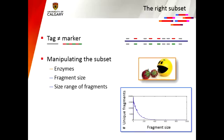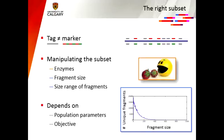Things you can do to manipulate this subset include changing enzymes, since different enzymes recognize different DNA sequences and produce different fragments. You can also change the fragment size you're sequencing: an in silico digestion shows a clear skew towards smaller fragments, so if you want lots of tags it's better to sequence smaller fragments. You can also change the size range — I'm typically sequencing a range of 50 base pairs, so 100 to 150 base pair fragments; a wider range gives you more tags. Population parameters also matter: if you know there's a very high mutation rate in your species, you may be able to use fewer tags because it's more likely each tag is actually a marker.